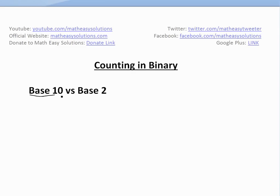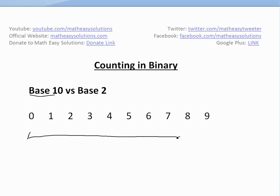I just want to go over base 10 versus base 2 quickly. What I mean by base 10 is this is the regular number system we're used to. If I count from 0 to 9 — I counted here from 0, 1, 2, 3, all the way to 9 — these are 10 numbers right here.